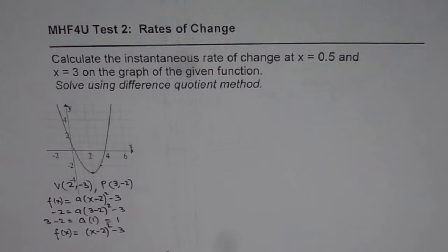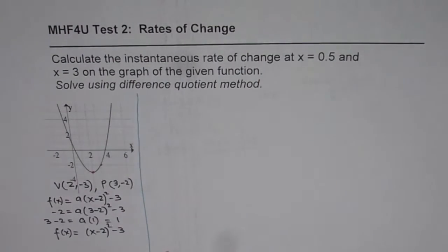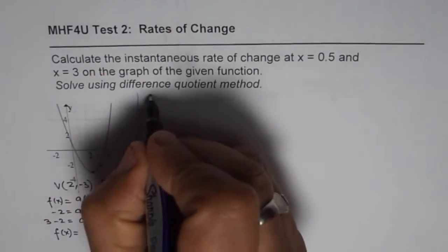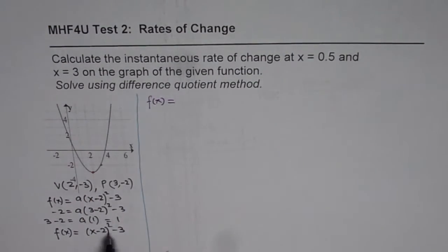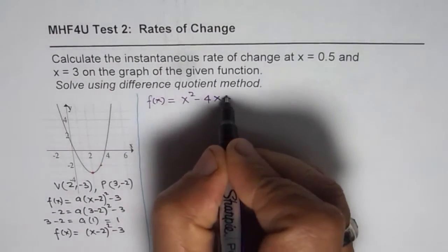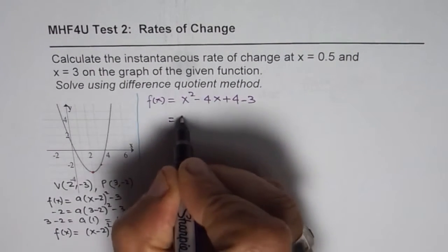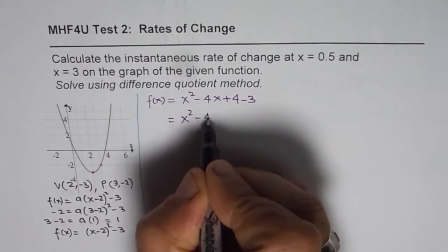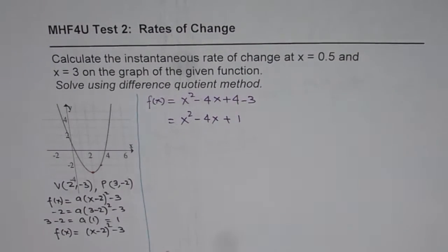This is the equation in vertex form; we can also write it in standard form. Expanding (x minus 2) squared gives x squared minus 4x plus 4, then minus 3, which gives us x squared minus 4x plus 1. So that is the quadratic function for us.